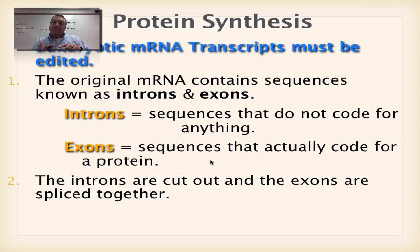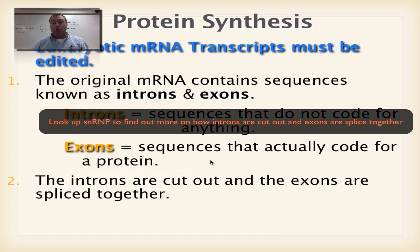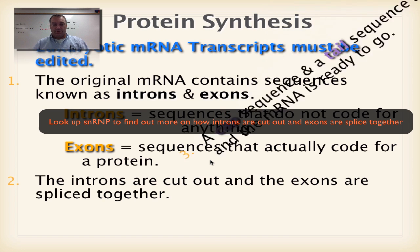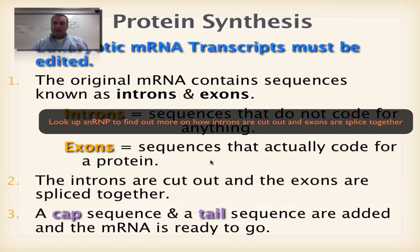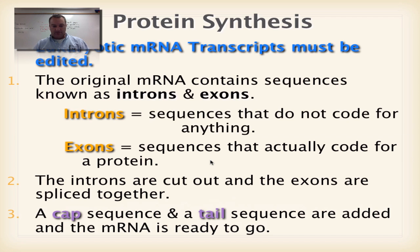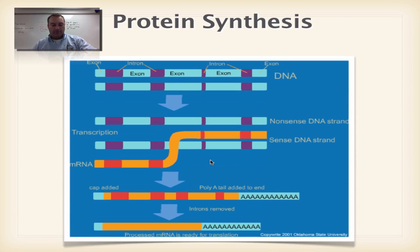The next step is we have to cut out the introns and we need to splice the exons together. Now this is for a high school freshman class. We're not going to know all the details, but the introns are cut out and they form these really neat substances which have a really funny name out of science. They're called snurps. Then we have to add a cap and we have to add a tail. And we have a picture that's going to explain how this works.